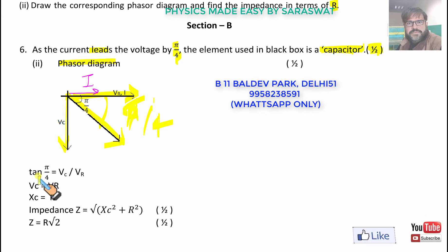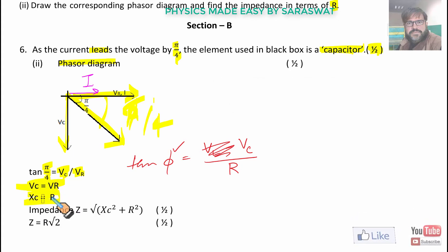The phasor diagram: this is Vᴄ and this is Vᴿ. Current is in the same direction as Vᴿ that is I and this is the net voltage EMF. This is the phase difference π/4. Now, applying tan φ, the formula was tan φ is equal to Vᴄ/R. As Vᴄ is equal to Vᴿ, Xᴄ is equal to R. And the impedance is Z = √(Xᴄ² + R²), Z is R√2.